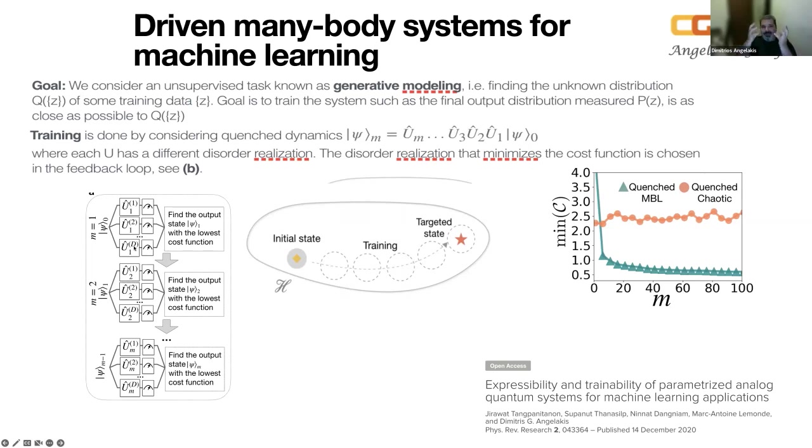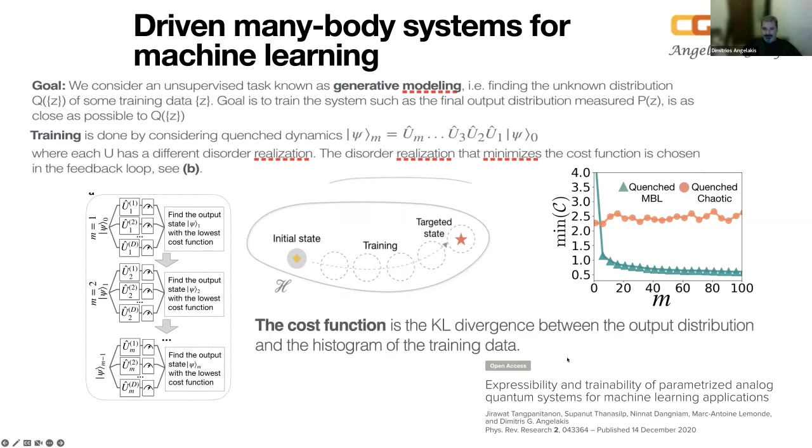The details on level further is that you were trying to do generative modeling. This is unsupervised machine learning, basically trying to find this unknown distribution Q of Z for some certain training data Z and you're trying to train the system such that the final distribution measure, which is P(Z) is as close as possible to Q(Z). So basically your cost function again is the distance between P and Q. And the training now is done using quench dynamics. So you have your many body system, which you evolve for certain periods. So you start, this is the layer number one. You start with your for a certain distribution of your couplings and local energies, but now it's important actually not to be at the thermal or the chaotic regime, because every time you change, you need to be somewhere that the system has some memory and moves towards this direction.